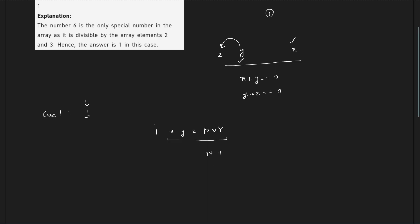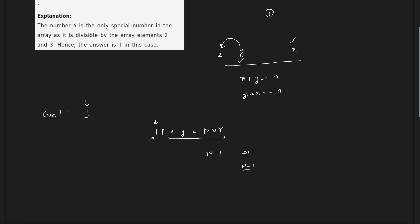What about 1 itself? If there exists another 1 in the array, then that 1 can divide the first 1 and the answer would be n; otherwise the answer would still be n minus 1. These are the possibilities because if no second 1 is present, there is no number which divides 1. There are no other divisors of 1, so we need at least one more 1 such that the total answer can be n.